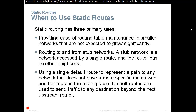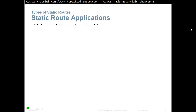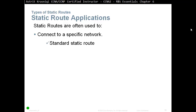Default routes are used to send traffic to any destination beyond the next upstream router. The router will have a routing table, and at the end is a default route — if it can't match any entries in the routing table, it uses the default route. Static routes are also often used to connect to a specific network using standard static routes, for example when connecting to an ISP.